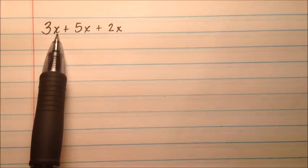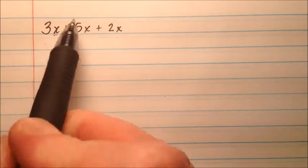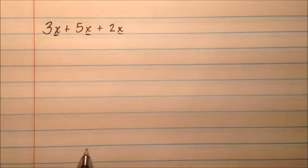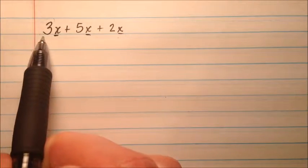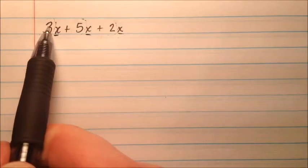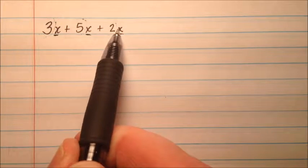Here we have 3x and 5x and 2x. They each just have an x, so they're considered like terms. We're going to combine them by doing operations on their coefficients, the numbers out in front. So we have 3x and we're going to add 5x and add 2x to that.